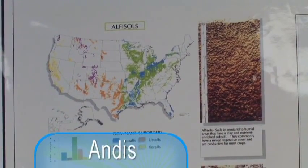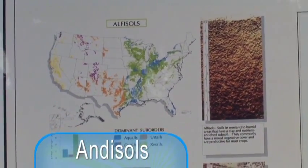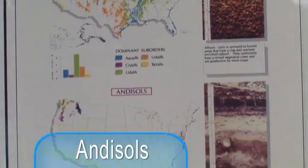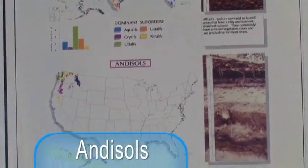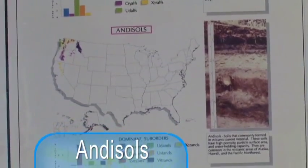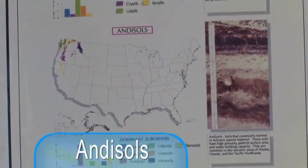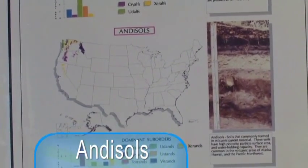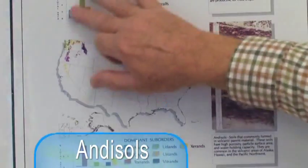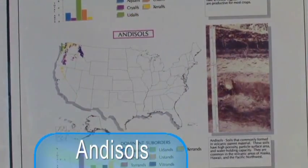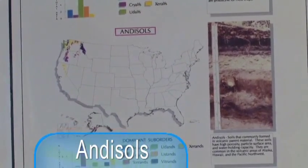The andisols are soils that occur primarily in the Pacific Northwest. These are primarily a result of volcanic activity, and of course in the U.S. this is the most recent area of volcanic activity.